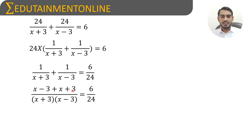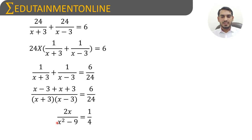In the numerator, minus 3 and plus 3 cancel, leaving 2x. The denominator (x+3)(x-3) is in the form (a+b)(a-b), which equals a squared minus b squared. Here, a squared is x squared and b squared is 3 squared which is 9, giving x squared minus 9. So we have 2x divided by (x squared minus 9) equals 1/4.